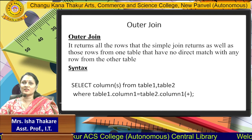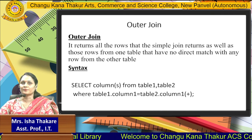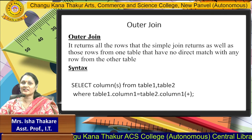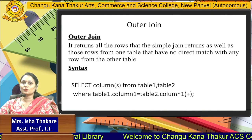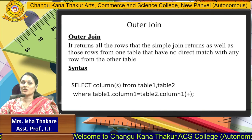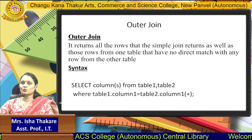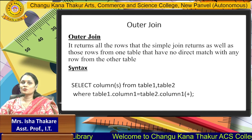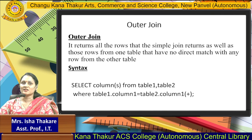But what if there are an uneven number of rows in the database? In this situation, we can use the outer join. The outer join returns all the rows that the simple join returns, as well as those rows from one table that have no direct match in the other table. The syntax is: SELECT columns FROM table1, table2 WHERE table1.column1 = table2.column1(+). The plus sign denotes the outer join and can be used on either side of the WHERE condition, but not on both sides.